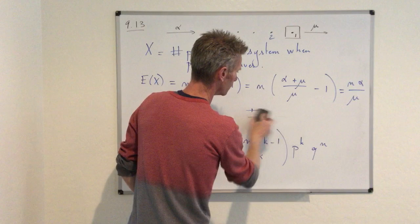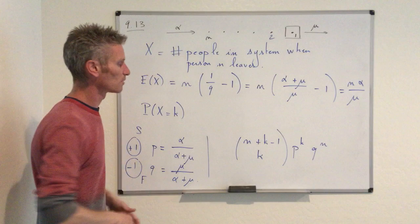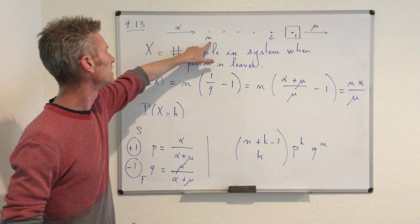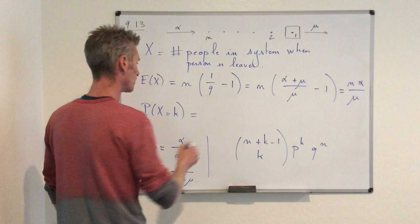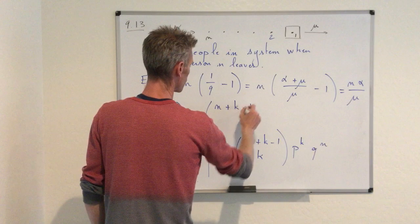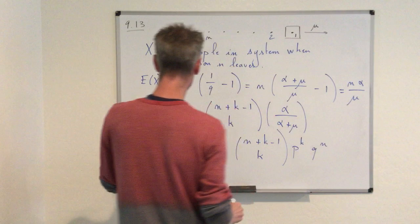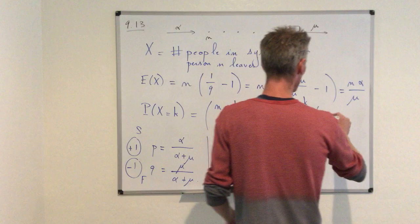This gives the complete probability mass function. Replacing p and q with their values in terms of n, α, and μ, we get: P(X = k) = C(n+k−1, k) × (α/(α+μ))^k × (μ/(α+μ))^n, for k = 0, 1, 2, …